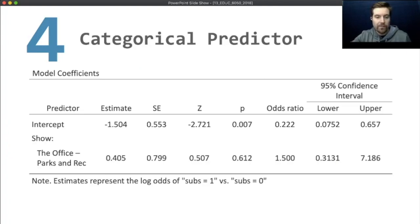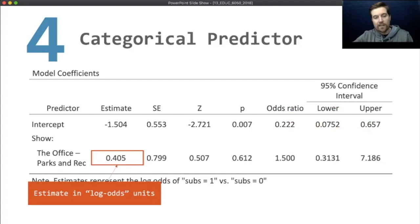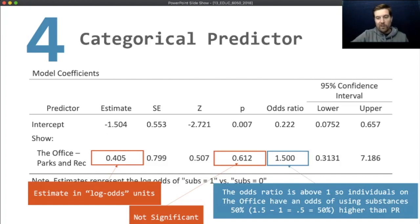We also could do this with a categorical predictor. In this case, we're comparing the two shows. We have the office and parks and rec. Again, that's a log odds units. If it's positive, it means there's a higher chance. Negative, a lower chance. This one is not significant, meaning there's not a significant difference. And then the odds ratio is saying it's above 1, so individuals in the office have an odds of using substances 50% higher than parks and rec. So because it's the office minus parks and rec, if this value is higher, that means people in the office have an odds of using substances 50% higher than in parks and rec.